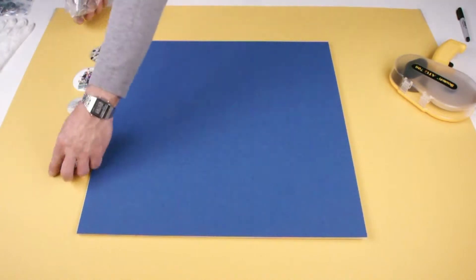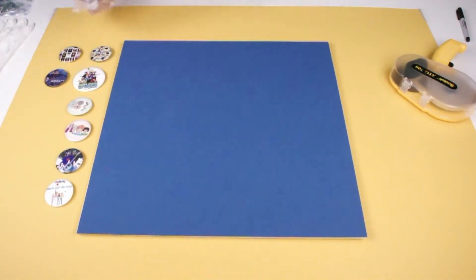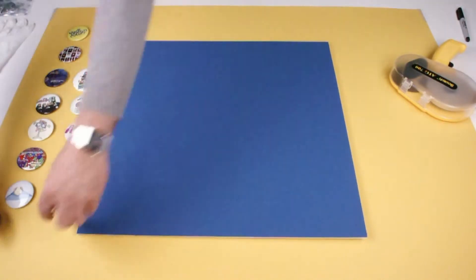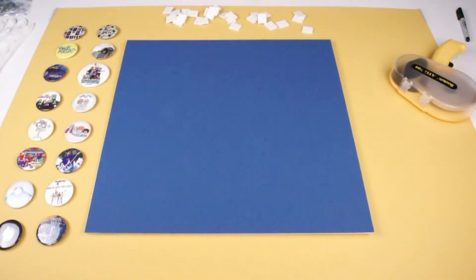Now we will lay out the buttons we want to frame. On a scrap foam board, we cut squares to help support our buttons.